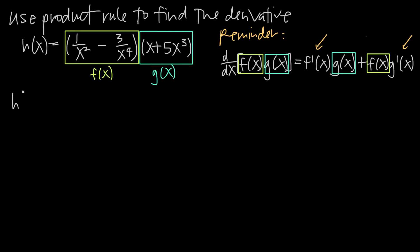So h is going to be equal to: instead of 1 divided by x squared, remember that 1 over x to the n equals x to the negative n. We can take x to the n, move it to the numerator, and the sign on the exponent changes. So x squared in the denominator becomes x to the negative 2 in the numerator, giving us just x to the negative 2.